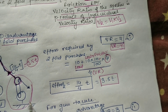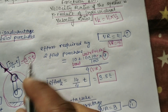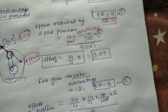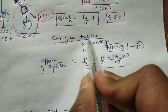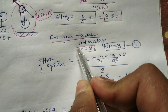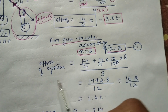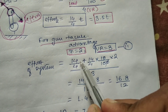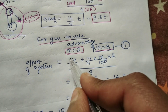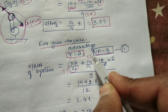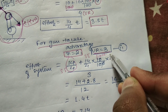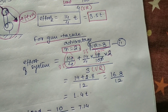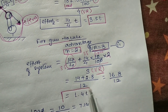So 3.5 tons now becomes the load for the gun tackle system. For the gun tackle rigged to advantage, the number of sheaves is 2 and the velocity ratio is 3. The effort of the combined system is calculated as: load (3.5 tons) plus 3.5 into friction percent into number of sheaves (2), divided by velocity ratio.